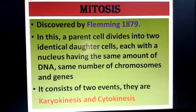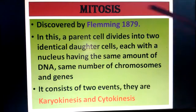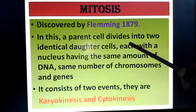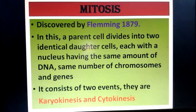Mitosis is the process of cell division that occurs in body cells. We have reproductive cells and body cells; mitosis occurs in body cells. This mitosis process was first discovered by Flemming in the year 1879. In mitosis, a parent cell divides into two identical daughter cells.